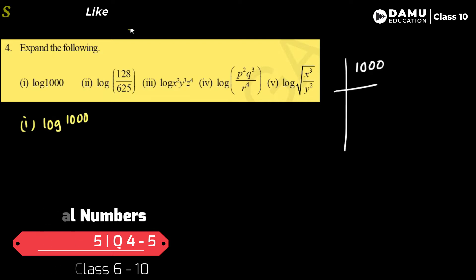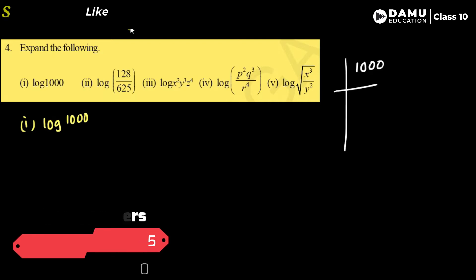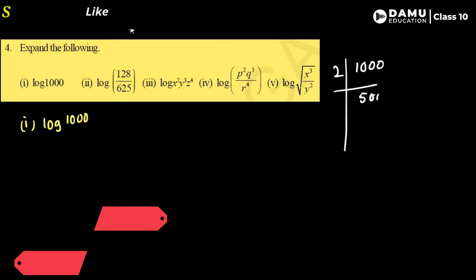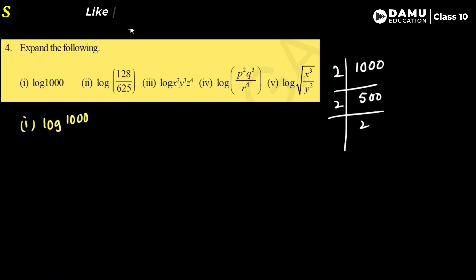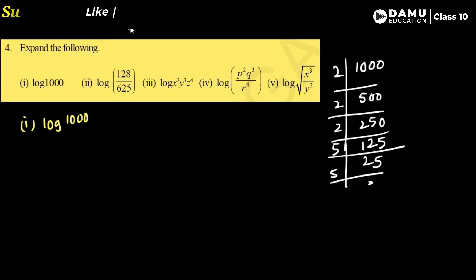We divide 1000 by 2 repeatedly. Since 125 is not divisible by 2, we go with 5. Dividing by 5 repeatedly gives us 5, 5, 5. So 1000 can be written as 2 × 2 × 2 × 5 × 5 × 5.